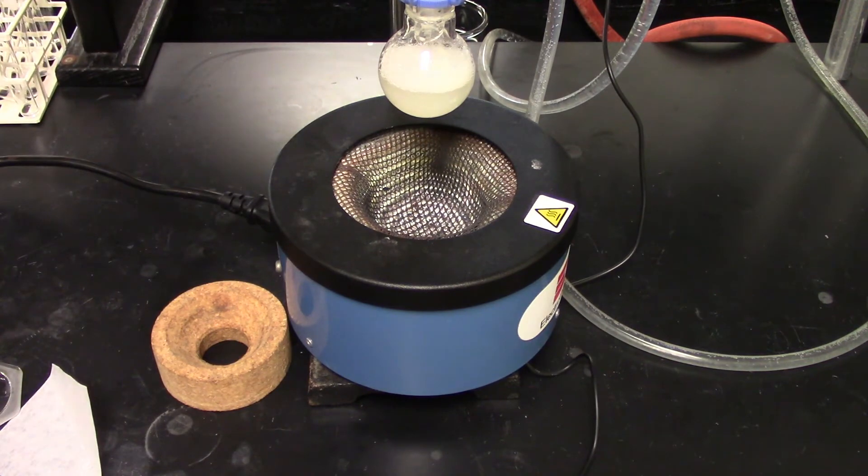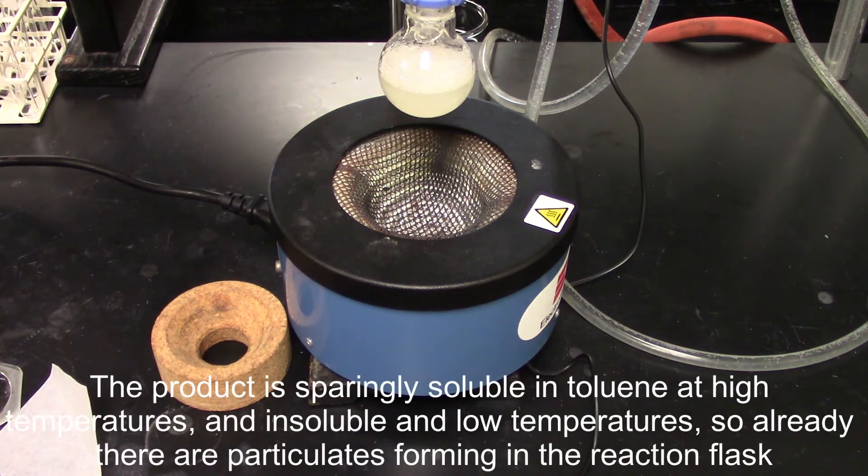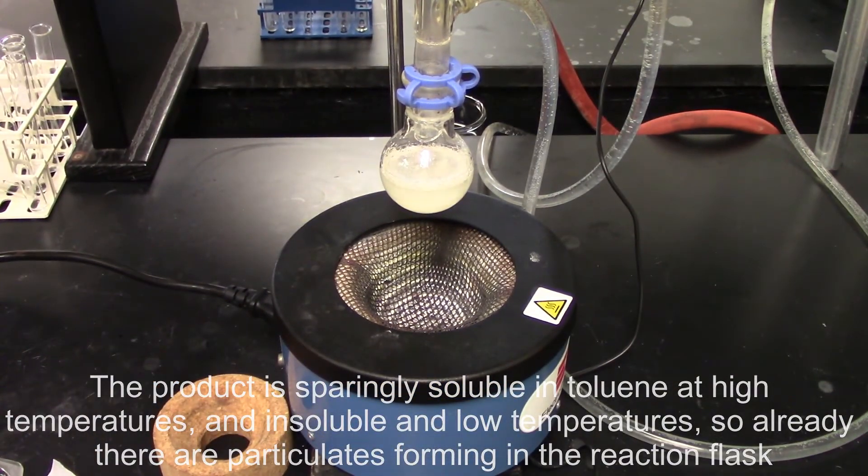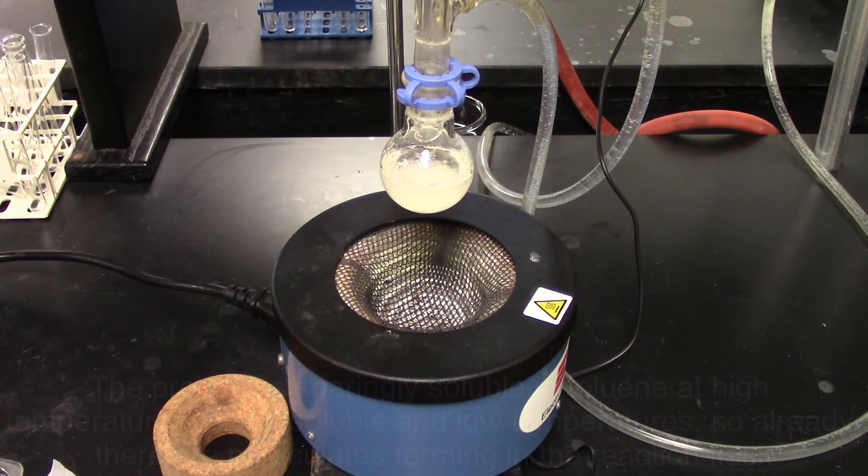Now our final product material is actually sparingly soluble in toluene, so we're already getting this foggy color due to what's starting to come out of solution. But definitely when we drop the temperature, we're going to see a lot more solid start coming out, and that will be our desired product. It's just not very soluble in toluene, so this makes this isolation pretty easy.